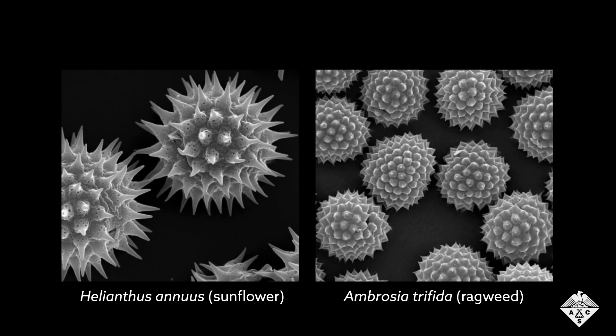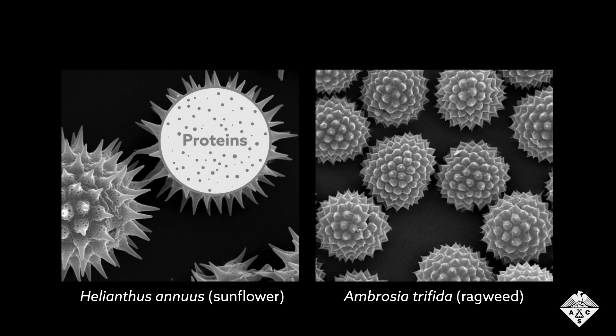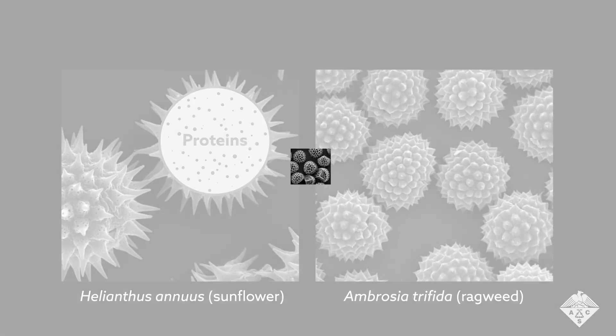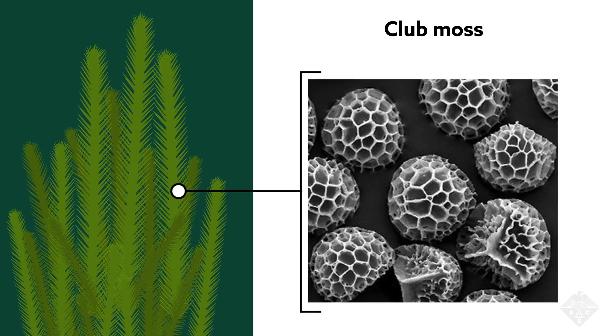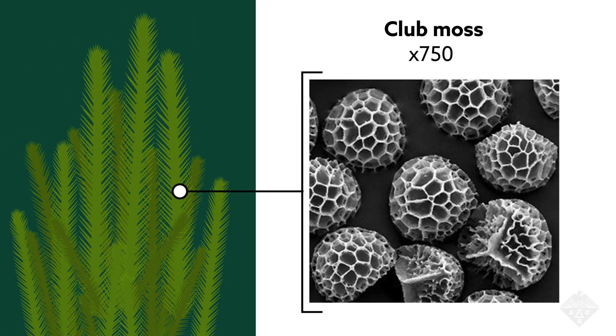These barbs and points and protrusions look like they would be responsible for your allergies, but actually it's the proteins inside the grains that you're allergic to. And these are spore grains. They're like pollen, but for asexual reproduction. These are from club moss, magnified about 750 times.